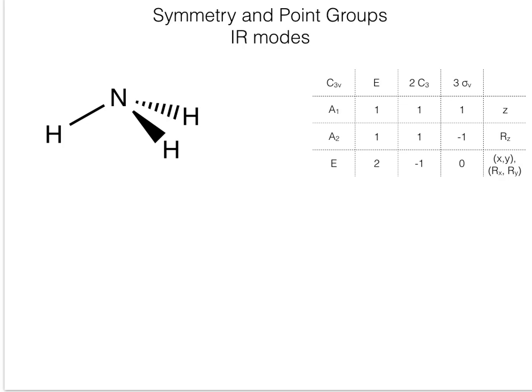For E, the identity operation, all atoms are unshifted because there is no movement, so that gives us four atoms. For C3, the only atom that will not move during that operation is the nitrogen, because all the hydrogens will be rotating around it, so we write a one here.